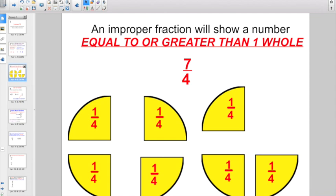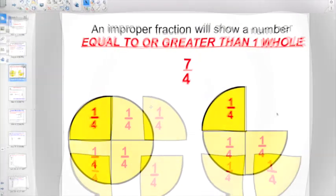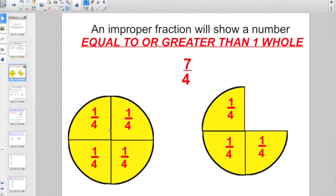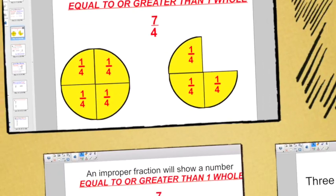So an improper fraction is always going to show a number equal to or greater than one whole. If I had 7 fourths here, and if I put these all together, you would end up seeing that you have one whole and then three more fourths, right? Are you starting to get an idea of what we're going to have to do?